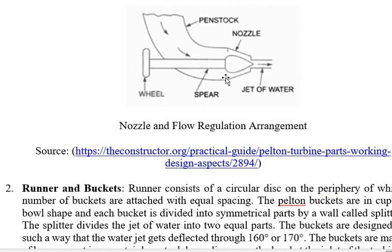The water flow through the nozzle is controlled using the spear. When the spear moves inward, less fluid flows through and a smaller amount of fluid hits the wheel. This is used when the power requirement is less and we want to reduce the wheel velocity.